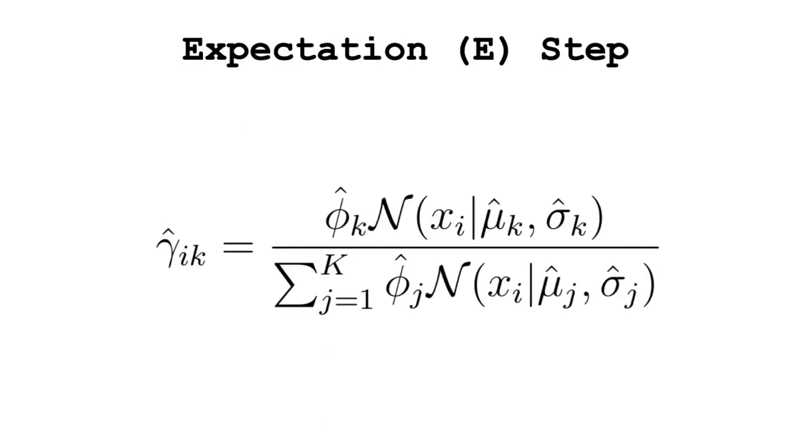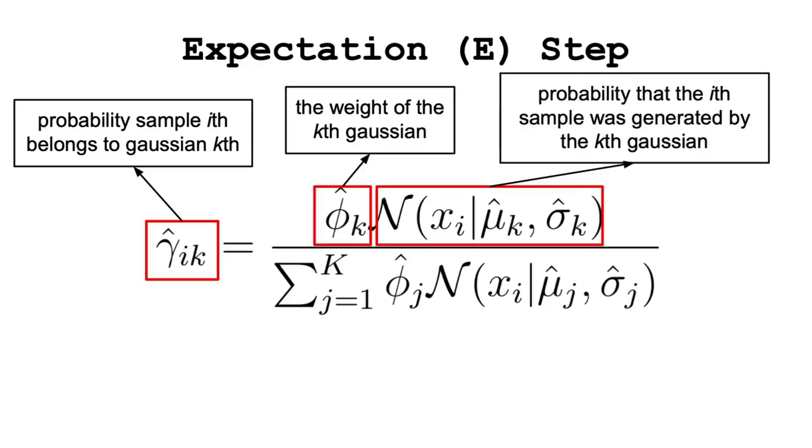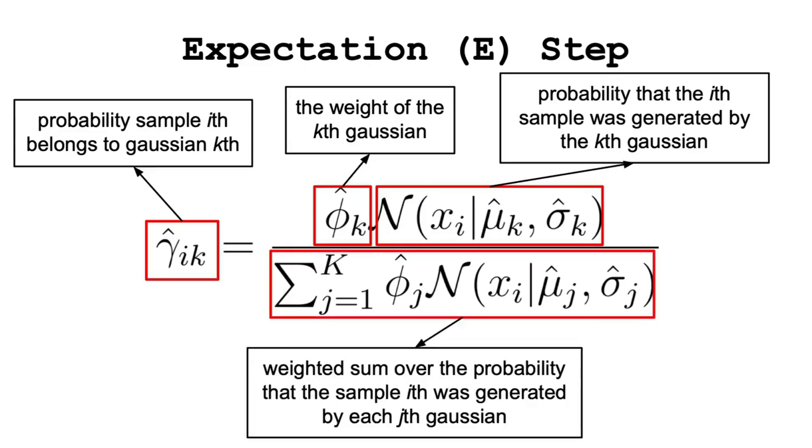When fitting this model in the expectation step, we compute gamma hat i k, which is the probability that the i-th sample was generated by the k-th Gaussian, by dividing the weighted probability of that sample to be produced by the k-th Gaussian, with the weighted sum over the probabilities that the i-th sample was generated by each j-th Gaussian.